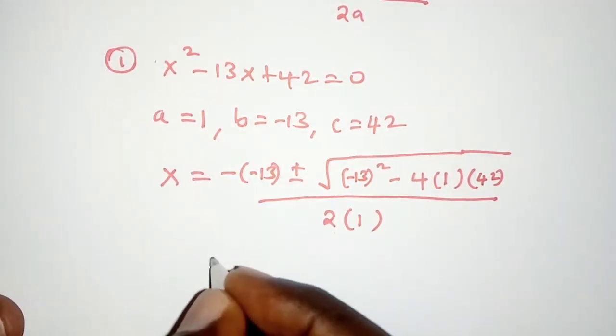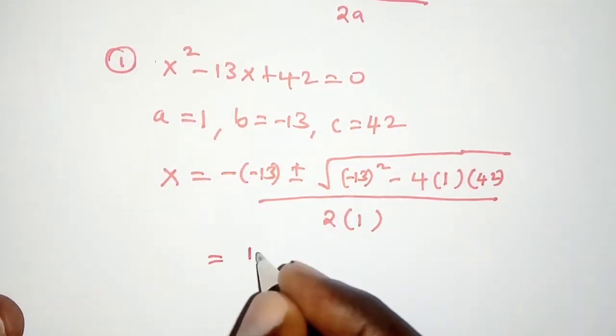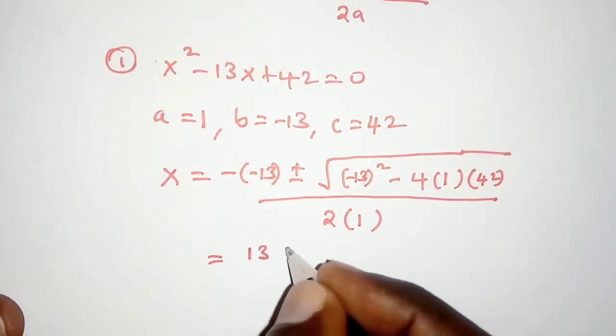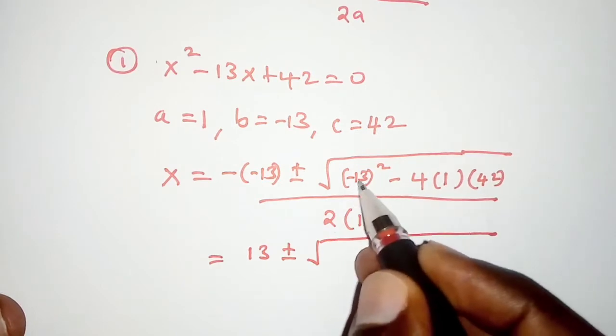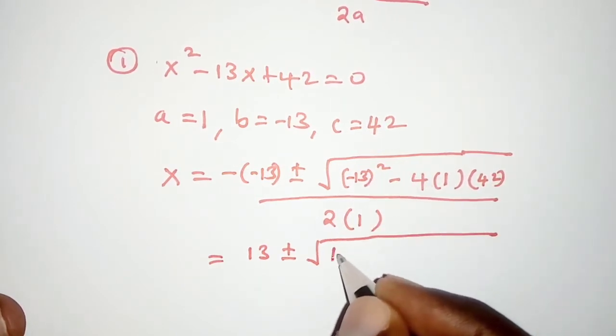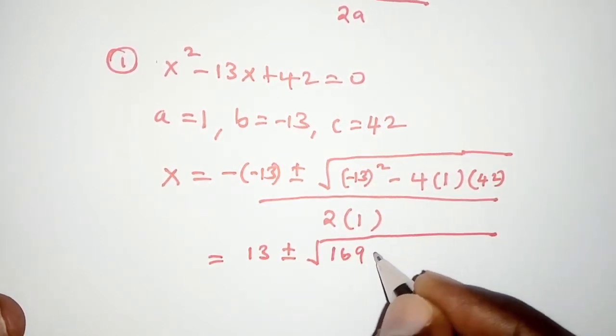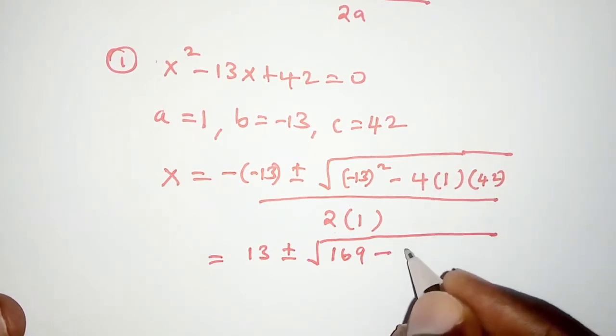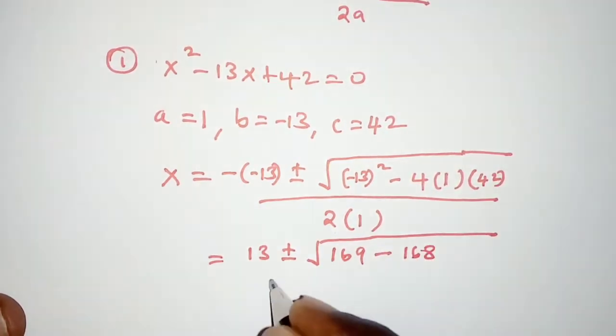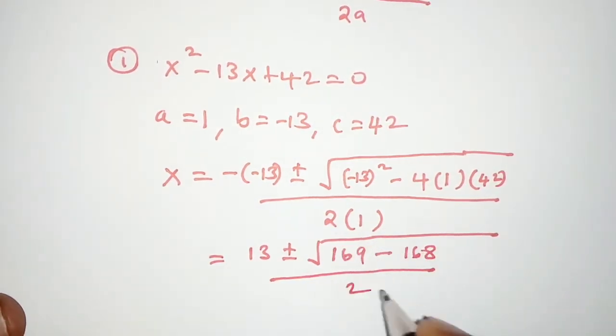Simplifying this further, we'll have negative by negative that means we have positive 13 there plus or minus the square root of negative 13 squared that is positive 169 minus 4 times 1 times 42 that is 168. We'll divide that by 2 times 1 that is 2.